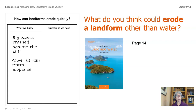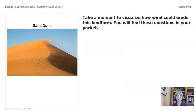So we did mention big waves and powerful rainstorms happening that can erode quickly. Let's add that other point here — gusts of wind. Now let's take a moment to visualize how wind could erode this landform, the sand dune.